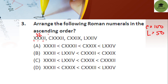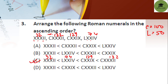CXXXII is 132. CXXIX is 100 + 20 + 9 = 129 (since IX before X means 9). LXXIV is 50 + 20 + 4 = 74. And XXXII is 32. So ascending order (smallest to largest) is: 32, 74, 129, 132. Option C is your correct answer.